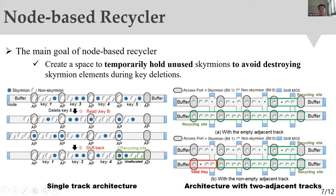Our second component, the node-based recycler, avoids destroying overheads. This design converts the deleted space into a recycling space, temporarily holding unused or deleted skyrmions. If the deleted space is adjacent to a neighbor with a recycling site, the skyrmion to be destroyed can be kept in the recycling site, avoiding destruction overhead, since unused skyrmions can be reused when new keys are inserted.